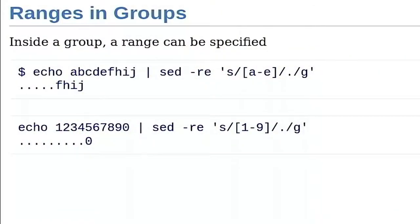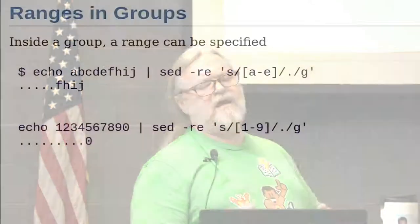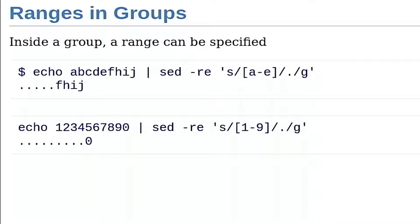Be careful with ranges: `[a-u]` won't give you just vowels — it gives you every character in the alphabet up to the letter U. Also: Unix is case sensitive, so `[a-e]` looks for lowercase letters only. I can tell sed to do case-insensitive matching, or change the regex to include both `[a-e]` and `[A-E]`. And you can do `[1-9]` for digits — I'll leave it as an exercise to figure out where to put the zero if you want all ten digits.